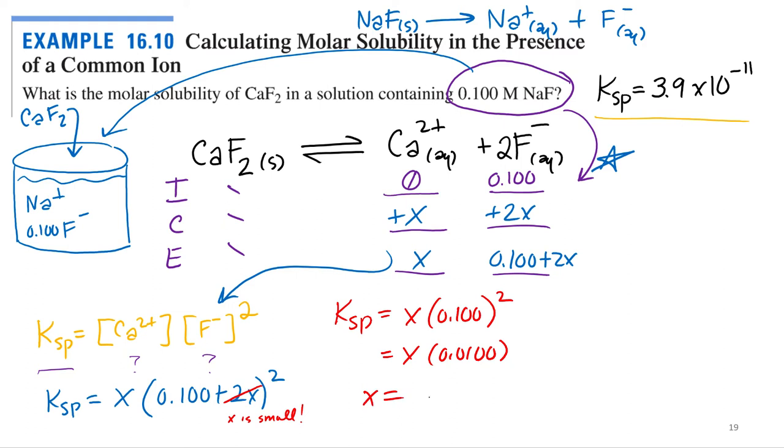So x is going to equal Ksp divided by 0.1 squared, or 0.1 squared divided by 0.0100. So x is going to equal Ksp, what? It's 3.9 times 10 to the negative 11th, all over 0.0100. Isn't it just going to be 3.9 times 10 to the negative 13th? I think the other way. 3.9 times 10 negative 9. Because that's 1.0 times 10 negative 2, negative 2.